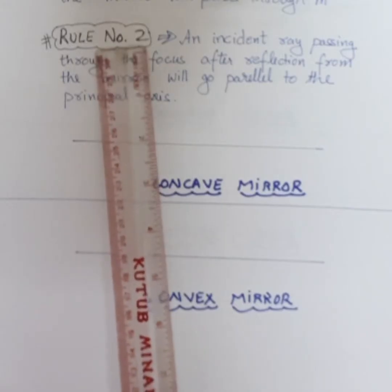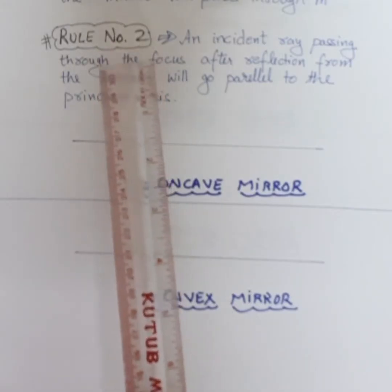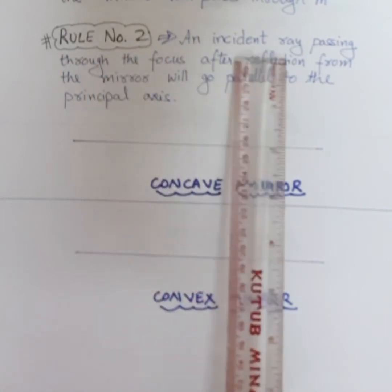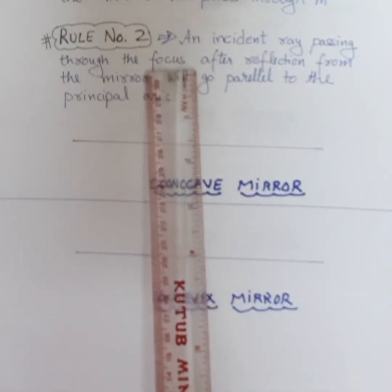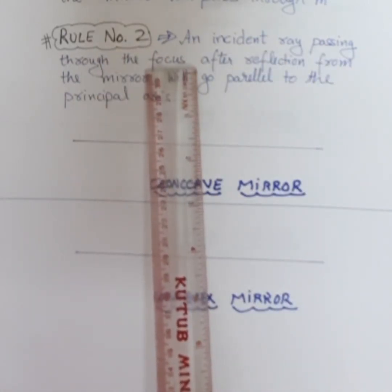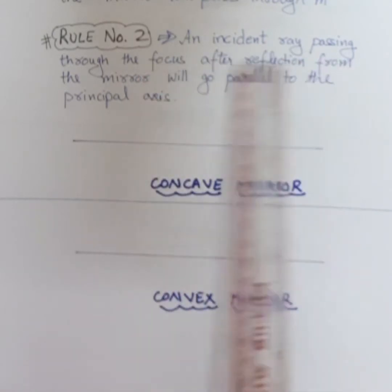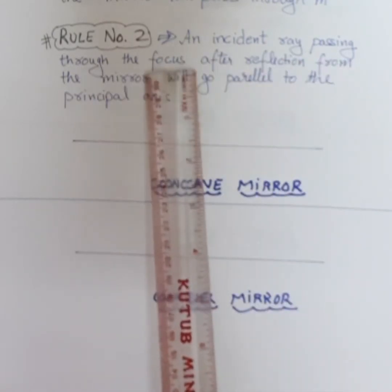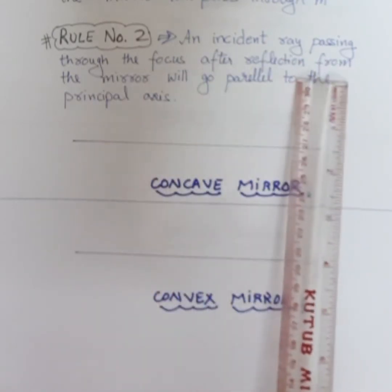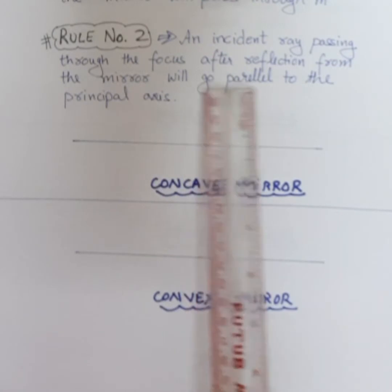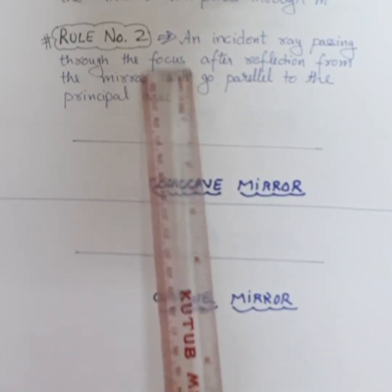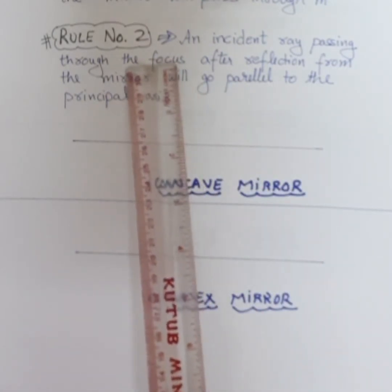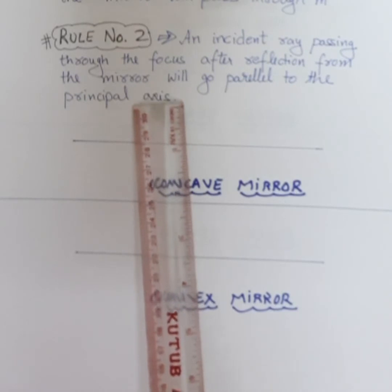Rule number 2 says this is the reverse of rule number 1. An incident ray passing through the focus - there it was parallel to the principal axis, but over here it is passing through the focus - after reflection from the mirror, it will go parallel to the principal axis. So passing through focus, after reflection, parallel to the principal axis.